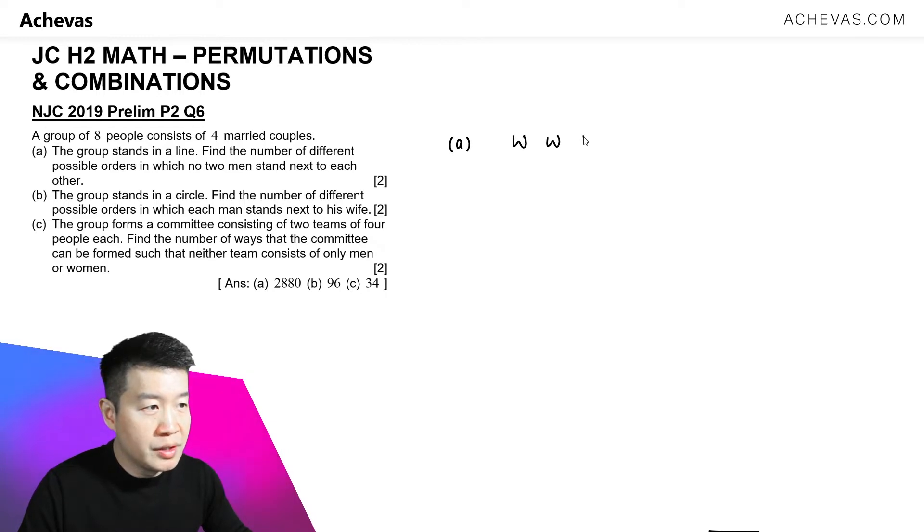So we have woman, woman, woman, woman. Arranging them, it is going to be four factorial. And I'm going to work on the spaces in between the women and at the two ends here. And here, there are five of them.